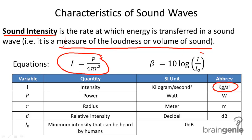In addition, we have what we call relative intensity. So relative intensity is given by beta. And relative intensity is measured in decibels.